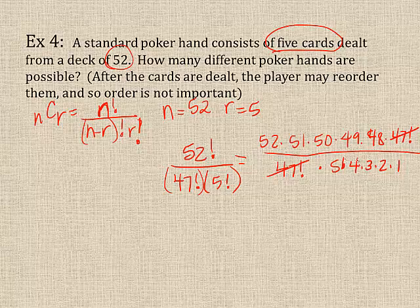You could type it in the calculator just like this, or you can do some simple reduction. 5 goes into 50 with 10 left over. 4 times 2 is 8. Times 3 is 24. 24 goes into 48 two times. So, really, all I have to type in the calculator is 52 times 51 times 10 times 49 times 2. And then I will find out that I can have 2,598,960 different poker hands from one single deck.